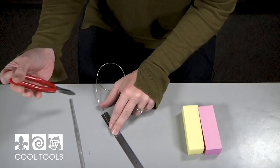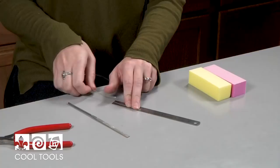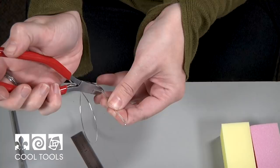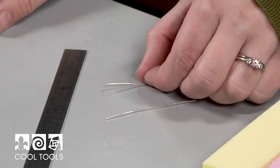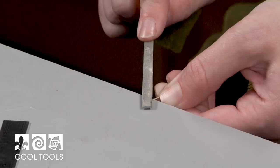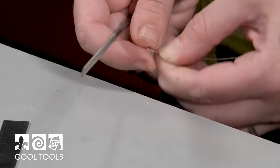This wire comes dead soft, which is really nice because it's easy to manipulate. I'm going to cut the other one to match. Now that these are both cut to the same size, I'm going to use a needle file to smooth out this end and make it nice and round.